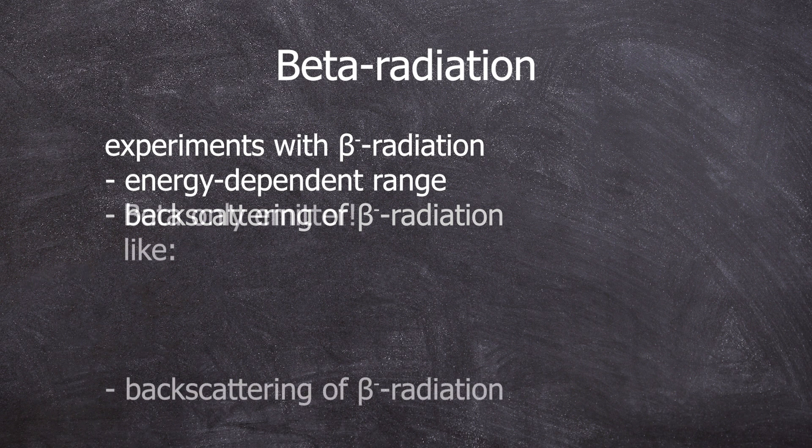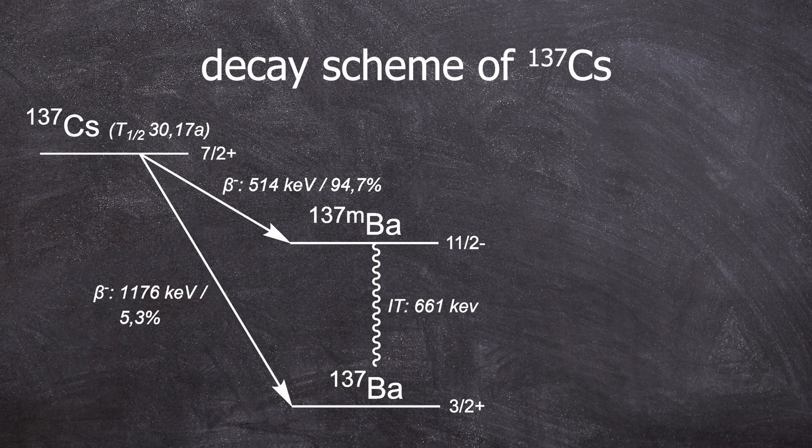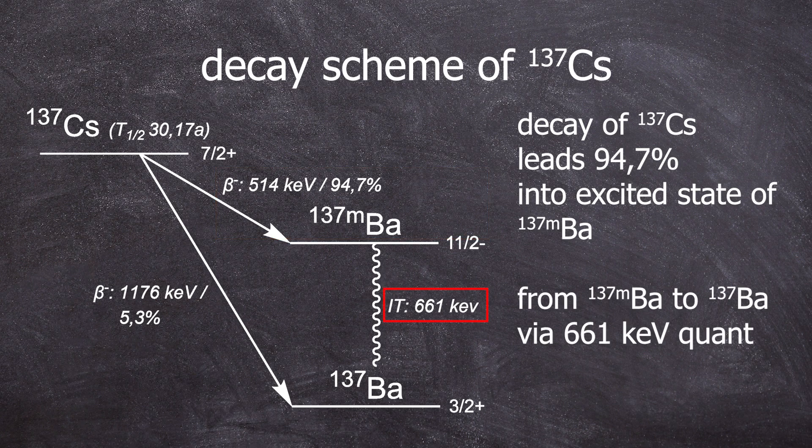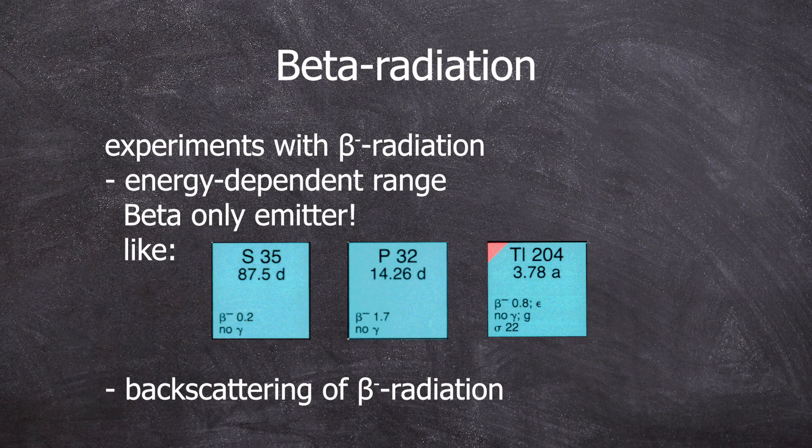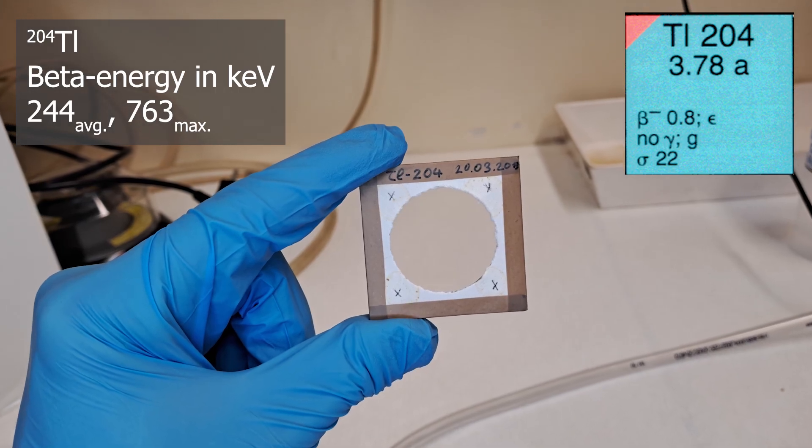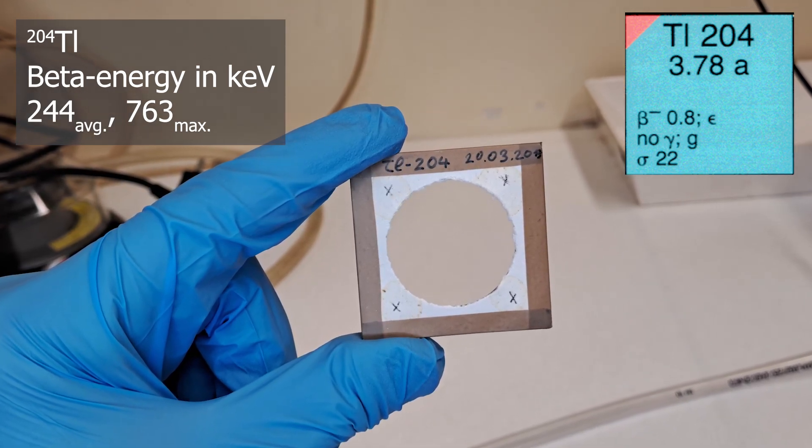For this, first we need a beta-only emitter. Often beta emitters do not decay directly into the ground state of the daughter nuclides and this excited state can also emit a gamma ray. This would interfere with our measurements as gamma radiation can't be shielded like beta radiation. There are several beta-only emitters commonly found in nuclear labs. We've already experimented with sulfur-35 in a previous video. For this experiment, we have a thallium-204 source. Thallium-204 has an average beta energy of 244 kiloelectron volts.